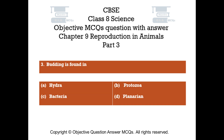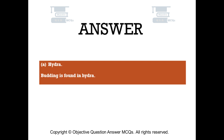Question number 3. Budding is found in. Option A: Hydra. Option B: Protozoa. Option C: Bacteria. Option D: Planarian. The right answer is option A — Hydra. Budding is found in Hydra.